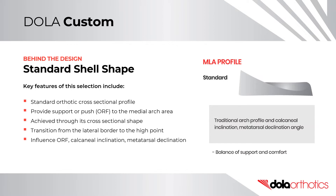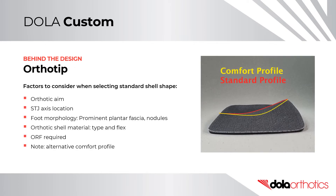This will influence the orthotic reaction force, calcaneal inclination and metatarsal declination. Ortho Tip: Factors to consider when selecting your cross-sectional shell shape include your orthotic aim for control versus comfort, the subtalar joint axis location, foot morphology including prominent plantar fascia or nodules, the orthotic shell material type and flex or density, and the orthotic reaction force required. Note, an alternative prescription option is the comfort profile.